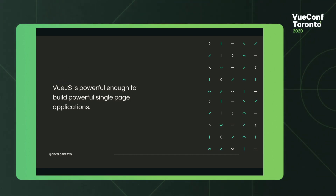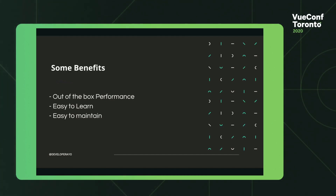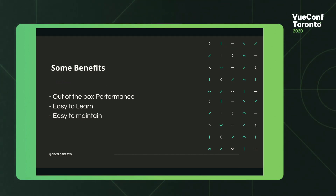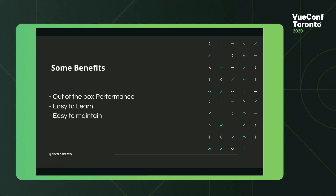Vue.js is naturally powerful enough to build single-page applications — whatever you want to build, Vue.js is there, it's fast, as long as you do not over-engineer. The benefits include out-of-the-box performance enhancements, it's really easy to learn, the documentation is excellent, and it's easy to maintain. It is simple and flexible — once you get a project cloned to your local directory, you know where to start from, what is what. It's really simple and very straightforward.